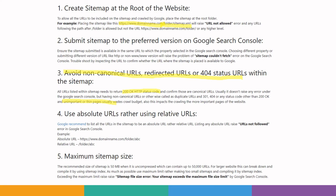Number five — understand the maximum sitemap size. The maximum sitemap size is 50 MB when uncompressed, and it can contain up to 50,000 URLs. For larger websites with above 50,000 URLs, you can break them down into several sitemaps and compile them using an index sitemap. If you want a video on how to create or generate an XML sitemap, let me know in the comments. If you exceed the size limit, you will see a 'sitemap file size error' indicating it exceeds the maximum file size limit.